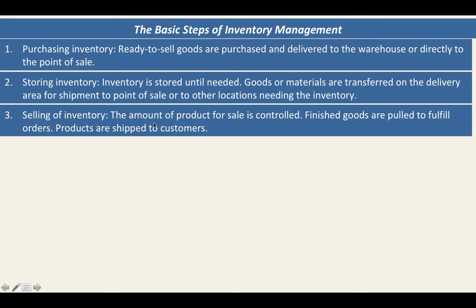The last step is selling of inventory. The amount of product for sale is controlled, finished goods are pulled to fulfill orders, and products are shipped to customers. So these are the basic steps of inventory management: purchasing, storing, and selling of inventory.